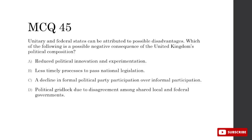What is a possible negative consequence of the UK's unitary political composition? D — political gridlock due to disagreement among shared local and federal governments: shared governance is federalism, not unitary. C — decline in formal political party participation: has nothing to do with unitary vs. federal. B — less timely processes to pass national legislation: actually unitary governments have more efficient policymaking with fewer obstacles. A — reduced political innovation and experimentation: because it's efficient, they're likely to repeat the same processes; also the only non-nonsense answer. So A is correct.